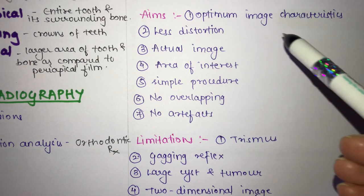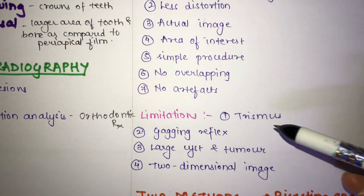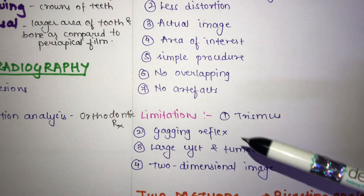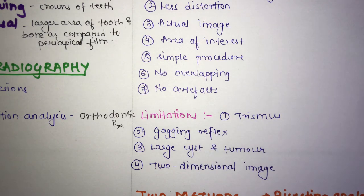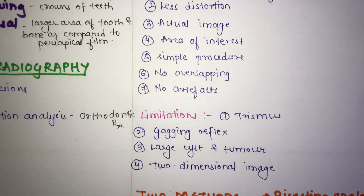The limitations of periapical radiography are as follows. First, trismus — patients with difficulty opening their mouth cannot have periapical radiography performed. Second, gagging reflex — patients with a gagging sensation, especially during radiographs of posterior teeth, will gag when the film is inserted, making this a limitation.